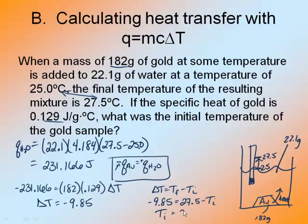So my initial temperature is 37.35 degrees Celsius. Okay, so again this fact is key. Whenever you have a heat transfer process, one thing is going to be endothermic and one thing is going to be exothermic, which means their heats are opposite in sign but equal in value. So notice the 231.66 is the same number, it just switched sign.